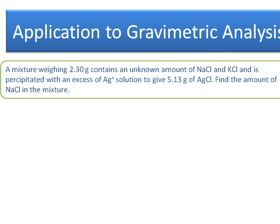In other words, we only know the total amount of sodium chloride and potassium chloride. We don't know how much of each there is. This mixture is dissolved up and precipitated out with silver ions and gives 5.13 grams of silver chloride. Using this information, we should be able to find out how much sodium chloride and potassium chloride was in the original mixture.